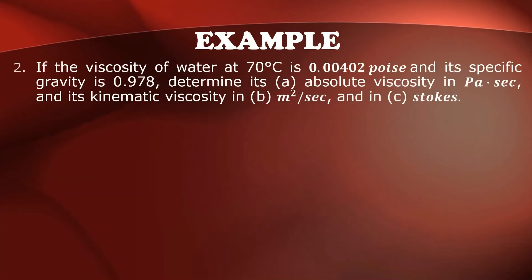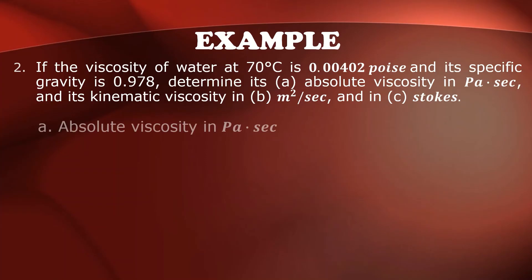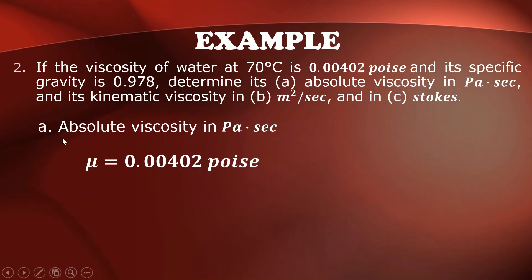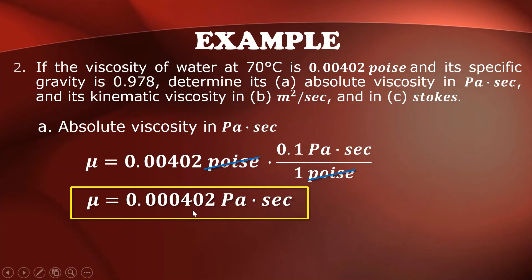Example 2: The viscosity of water at 70°C is 0.00402 poise and its specific gravity is 0.978. Determine its absolute viscosity in pascal-seconds and kinematic viscosity in meters squared per second and in stokes. For letter A, absolute viscosity: convert 0.00402 poise to pascal-seconds using 1 poise = 0.1 pascal-second, giving 0.000402 pascal-seconds.